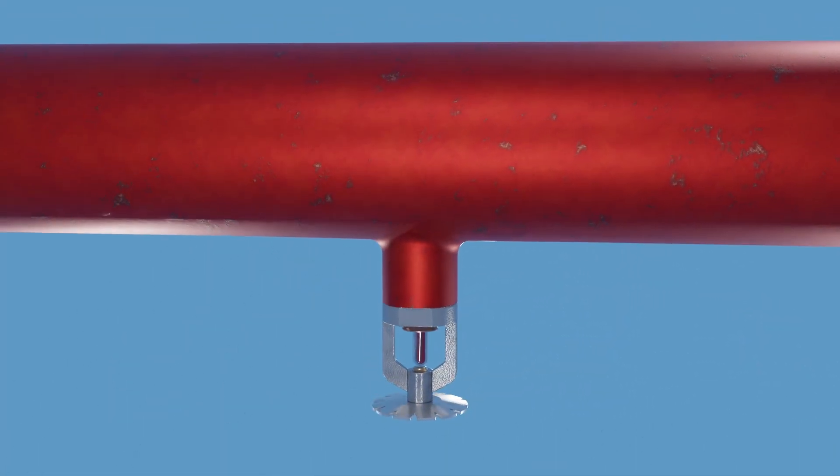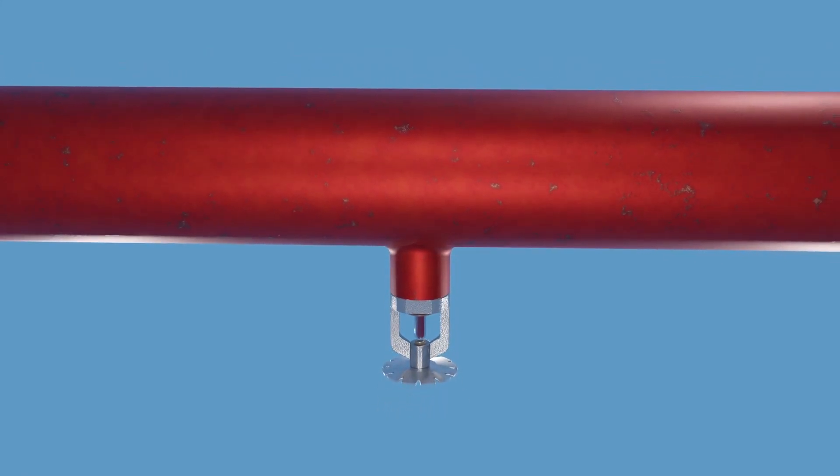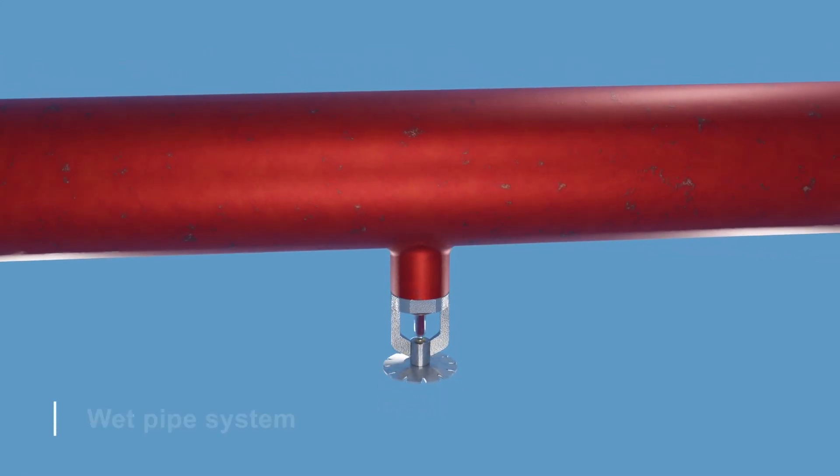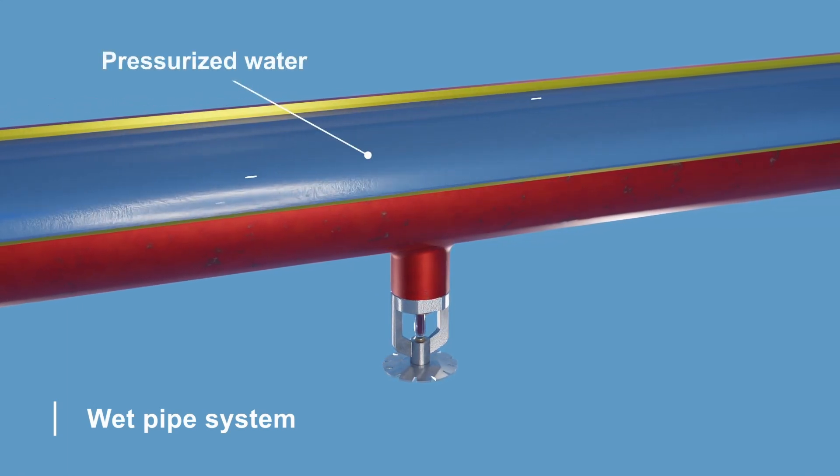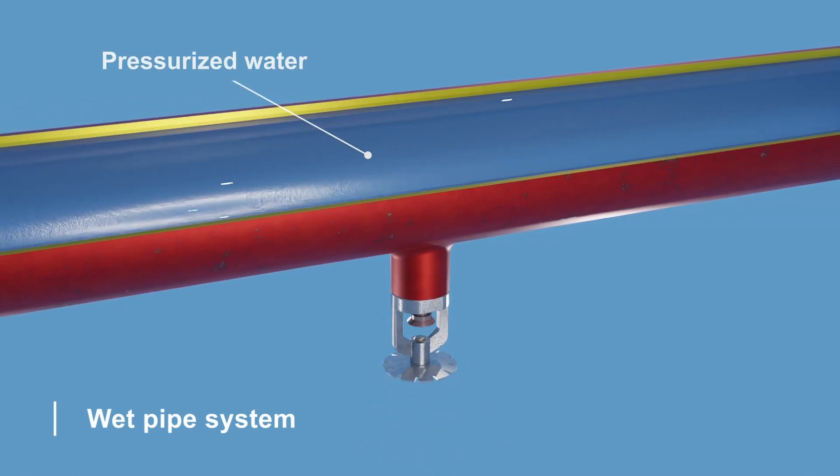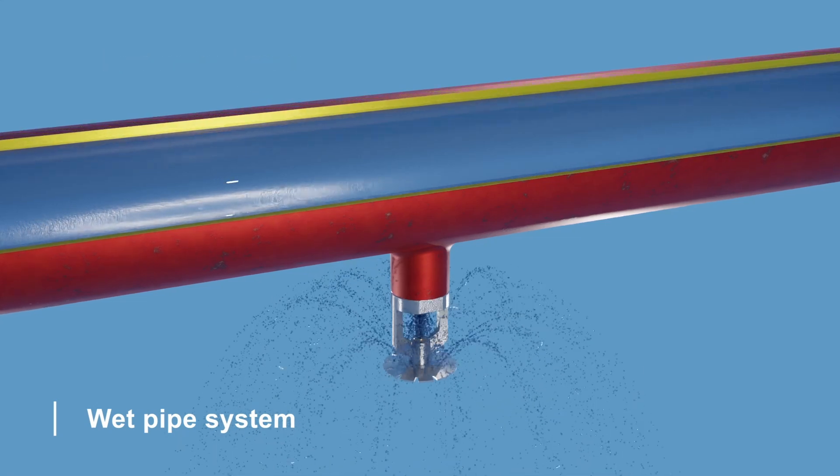There are two main types of fire sprinkler systems: wet pipe and dry pipe systems. In a wet pipe sprinkler system, the pipes are always filled with pressurized water. When a sprinkler head is activated, the water immediately flows out to extinguish the fire, providing a fast reaction time.